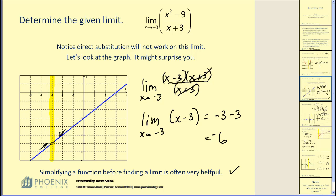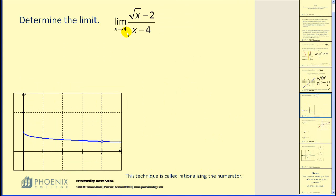This algebraic method is an alternative to analyzing the graph. Simplifying a function before finding a limit is often very helpful. The limit as x approaches 4 of this next function would produce a graph as we see below. As we approach x equals 4 from the left and from the right, we see that we would be approaching this hole in the function, which obviously has a y value of something less than 1.